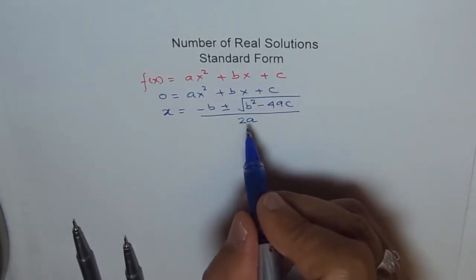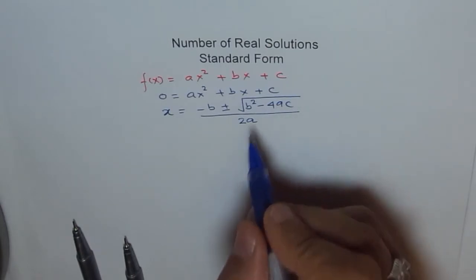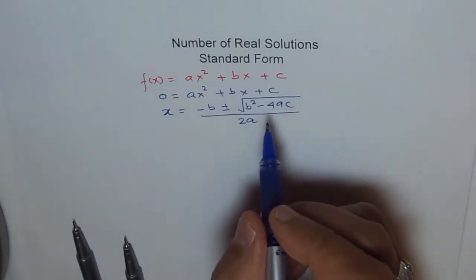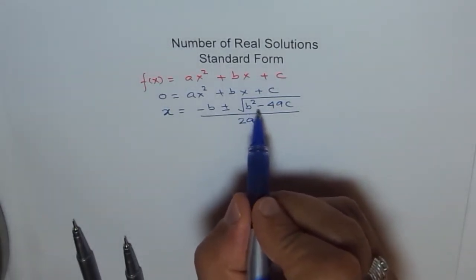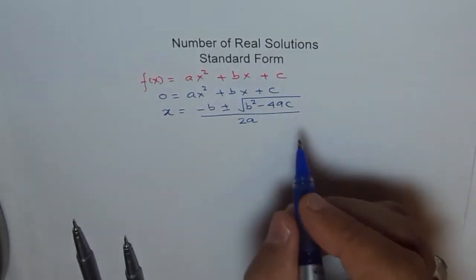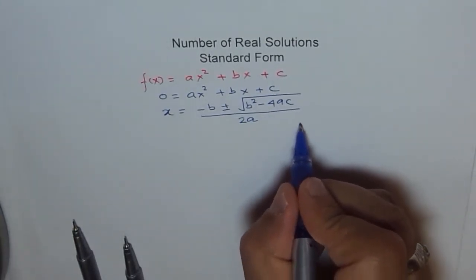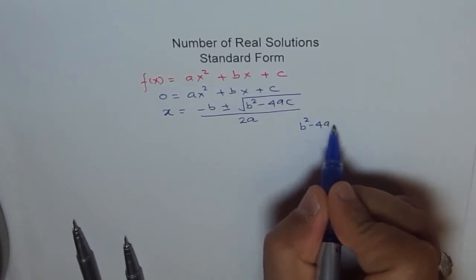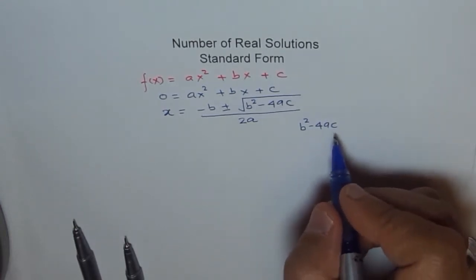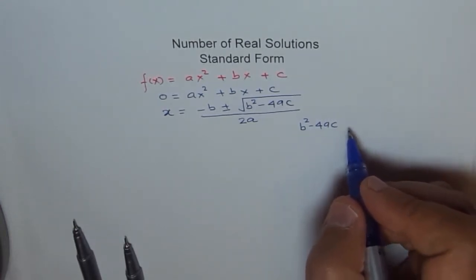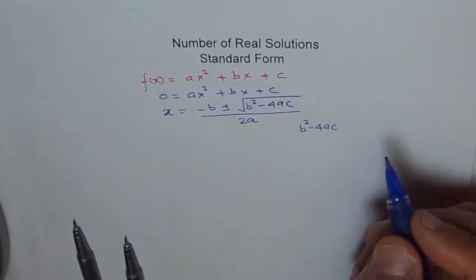So that is an excellent equation to find number of solutions also. How does it give you number of solutions? You have to only test the value of b square minus 4ac. So what happens? If you test the value of b square minus 4ac, then it could be either zero or negative or positive.